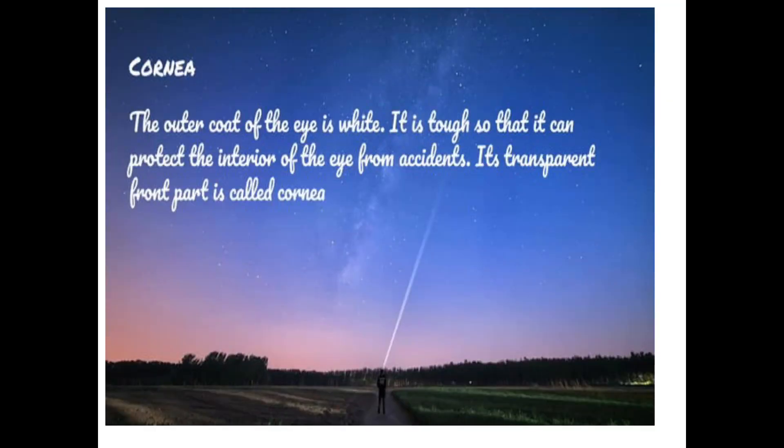The first part is cornea. The outer coat of the eye is white. It is tough so that it can protect the interior of the eye from accidents. The transparent front part is called cornea.